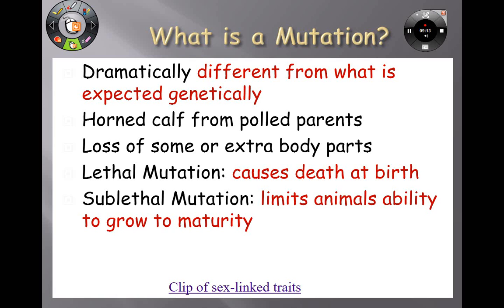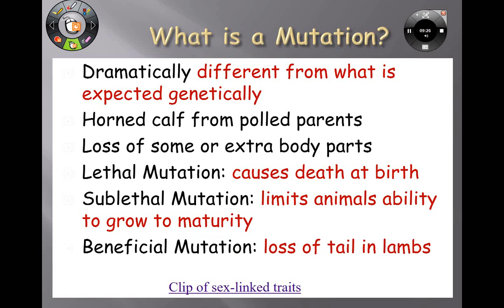Sometimes you have a lethal mutation — lethal means you'll die when you're born. The sublethal mutation just limits your ability to get to maturity. And lots of mutations happen to be beneficial: the loss of a tail, or features we like in dogs. That's why hairless cats are popular — we've continued to mate them because some people don't like cat hair, and that particular mutation came out and people like it.